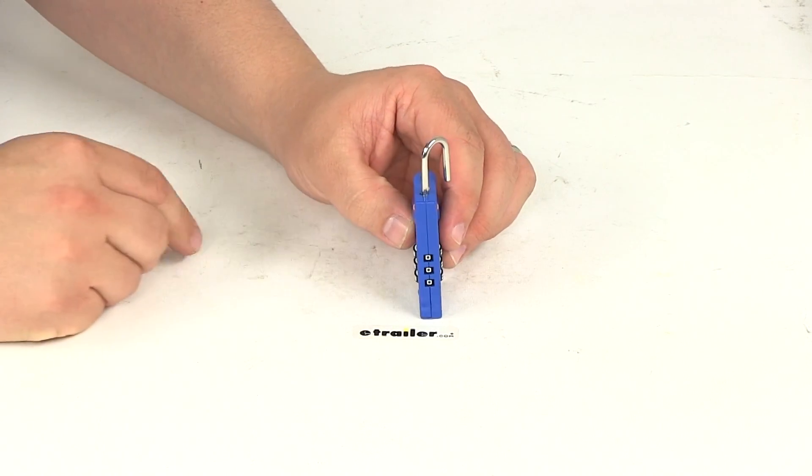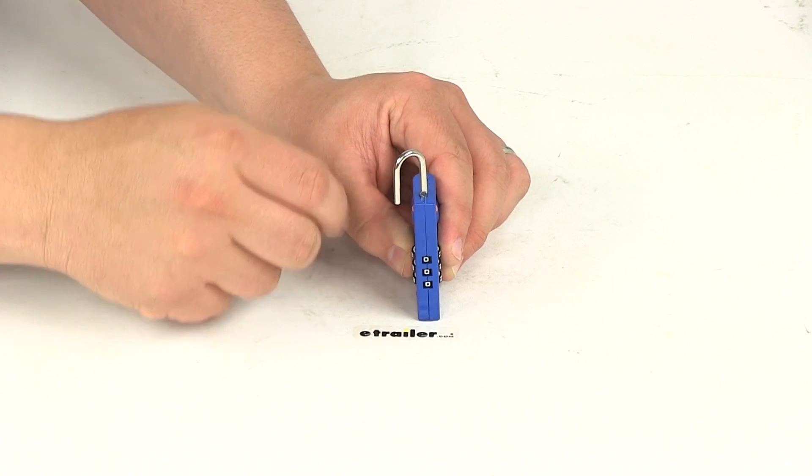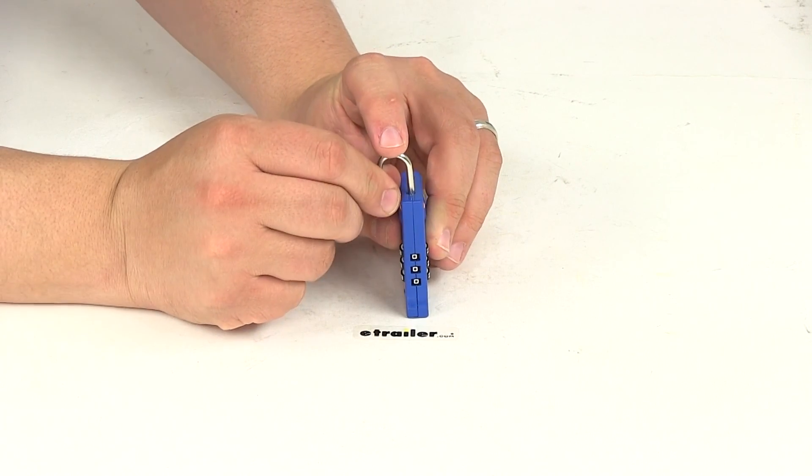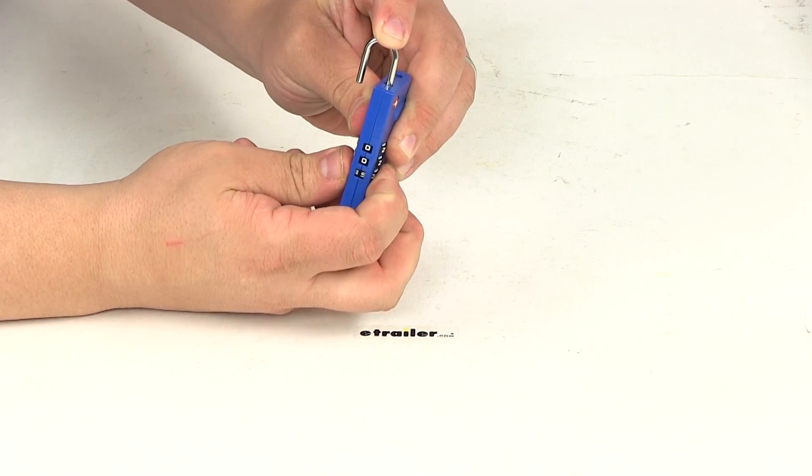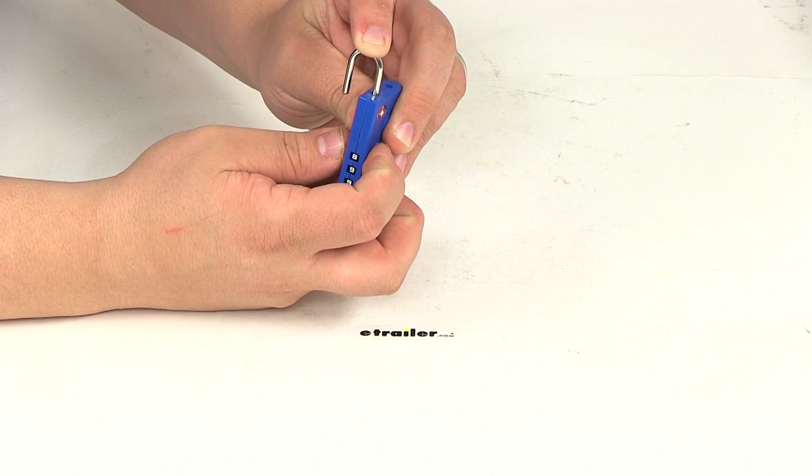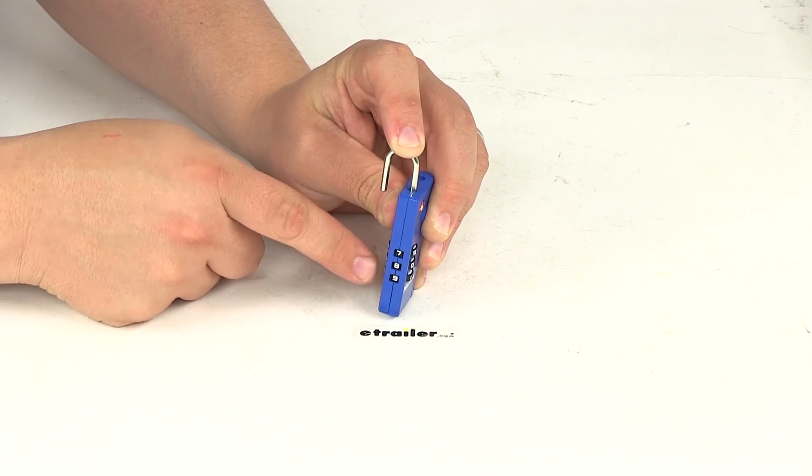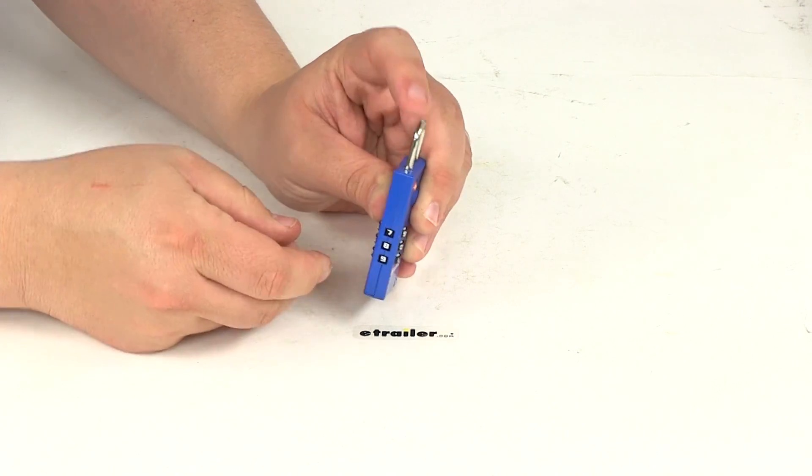Now in order to change the combination lock, place it to the side setting. You need to make sure that this gets pushed down, and then you can spin the combination to whatever you want. So if we want to switch it over to seven, eight, nine, set the new combination, take your finger off to let that go, and then now it's set.